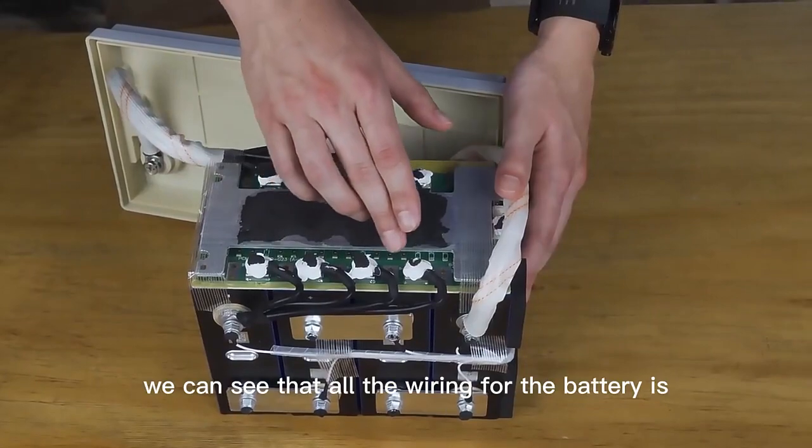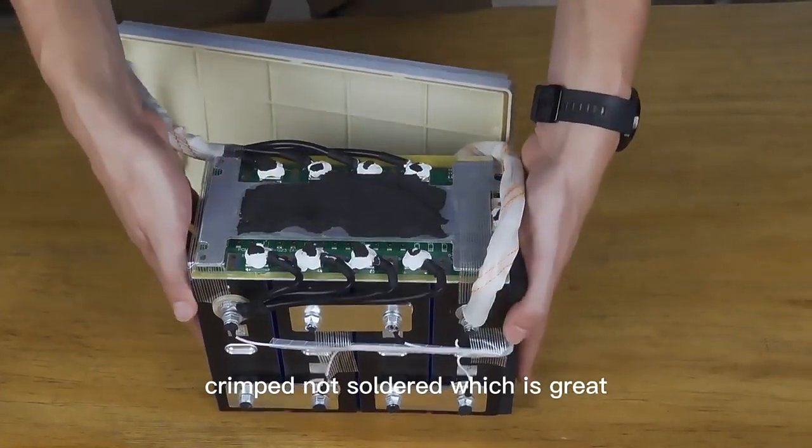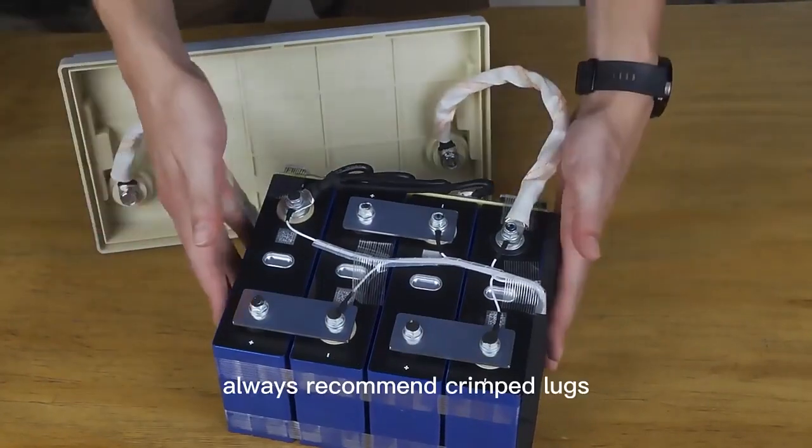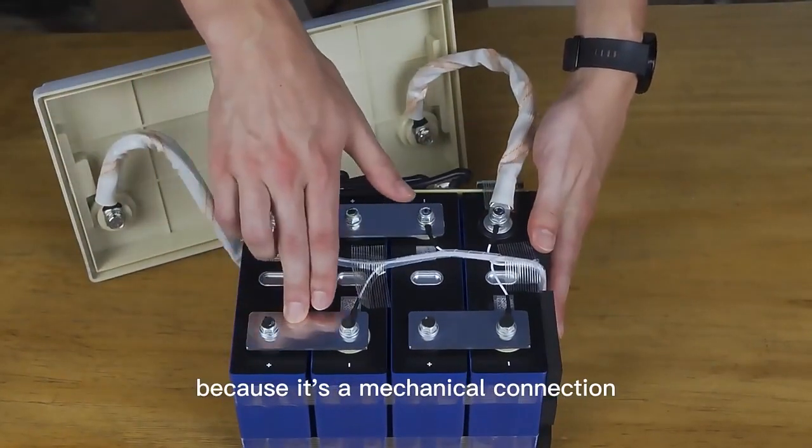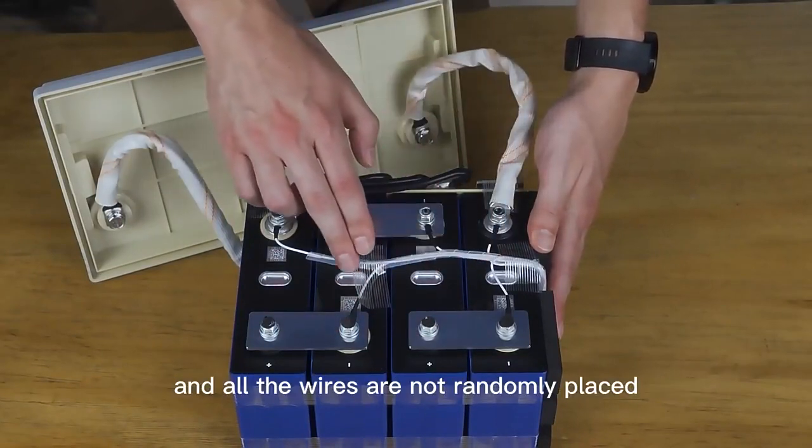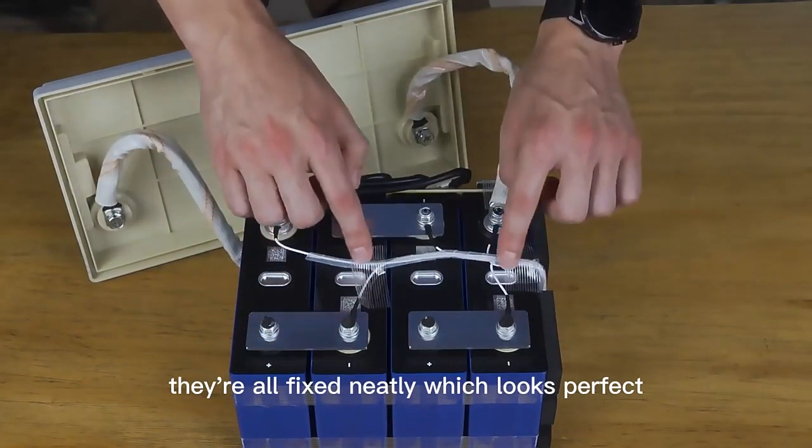We can see that all the wiring for the battery is crimped, not soldered, which is great. Industry standard and marine system manuals always recommend crimped lugs because it's a mechanical connection. Gas-tight cold weld will always be better than solder. And all the wires are not randomly placed. They're all fixed neatly, which looks perfect.